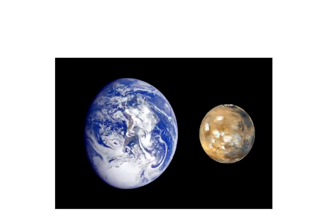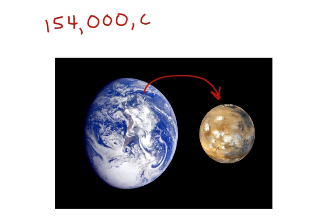Let's go back to Earth and Mars. You know that the distance from Earth to Mars is 154 million miles. Now what if we wanted to write that in a shorter way? We can do it using scientific notation.